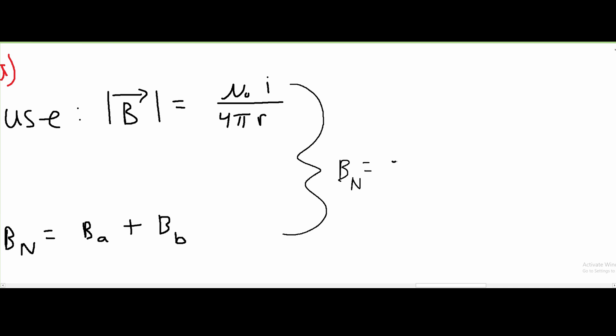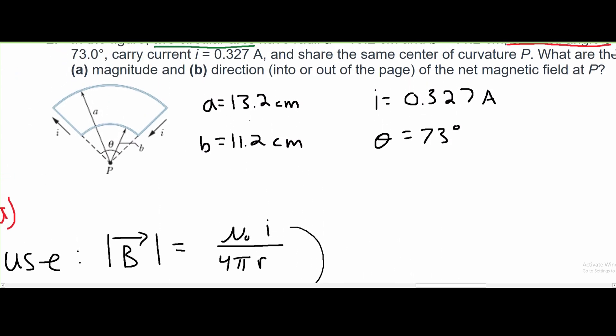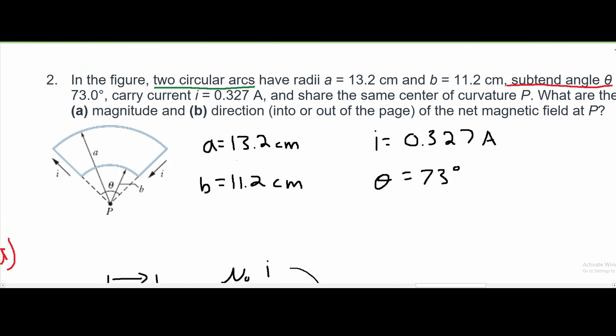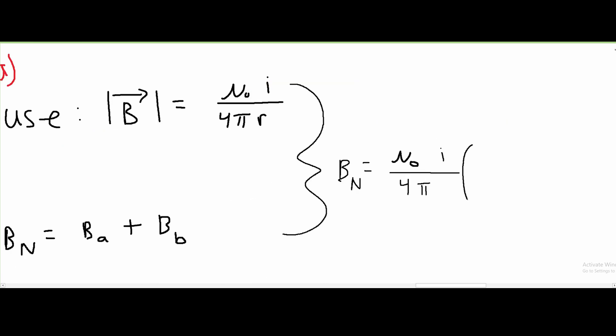Our μ₀ is constant throughout, so we can factor this out. Our I, since they're on the same current, is constant. Our 4π is constant as well. The only thing that's different is our radius. Radius for a is 13.2 centimeters, and radius for b is 11.2 centimeters. So we can multiply this by 1 over R_A plus 1 over R_B.